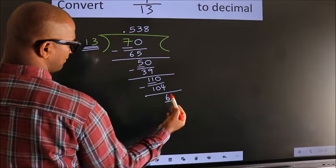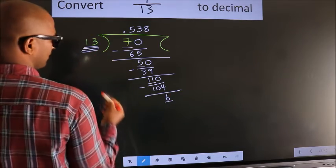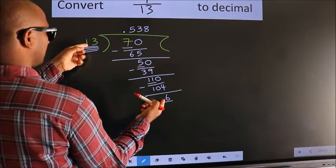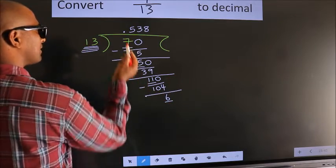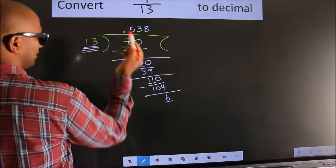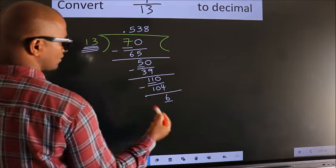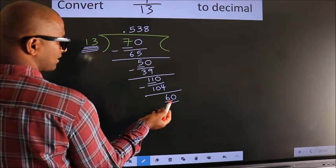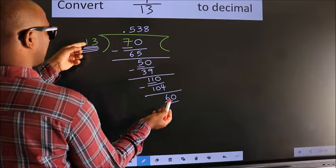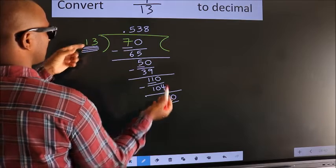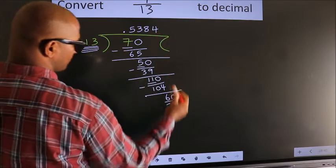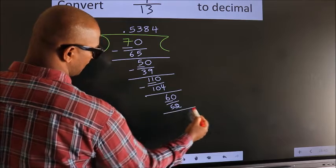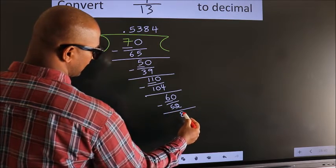Here we have 6, here 13. 6 is smaller than 13, and we already have the decimal, so we can directly take 0, making it 60. A number close to 60 in the 13 table is 13 fours — 52. Now we subtract and we get 8.